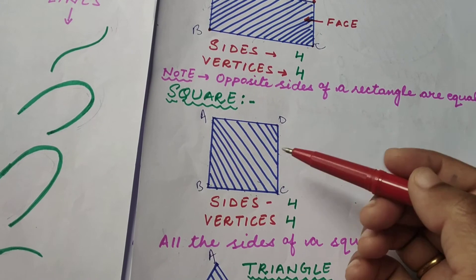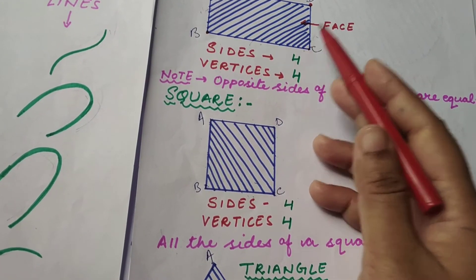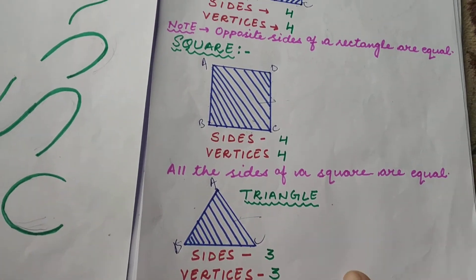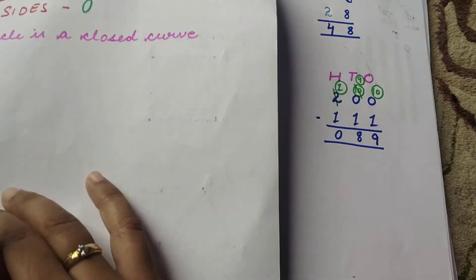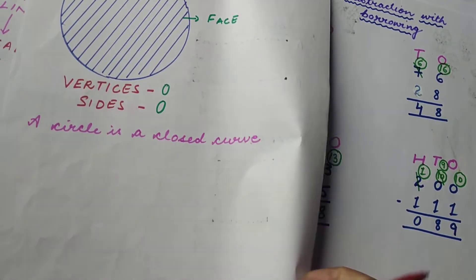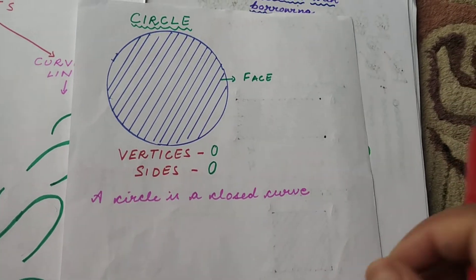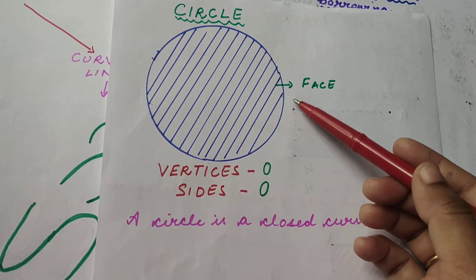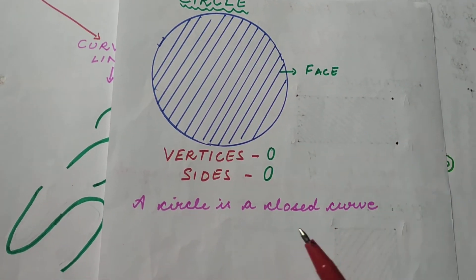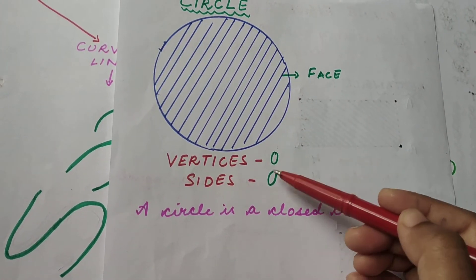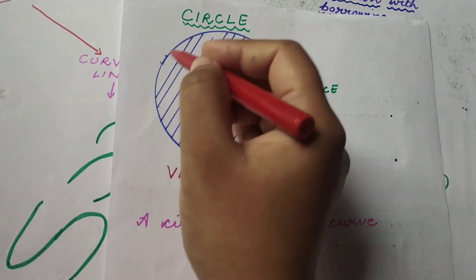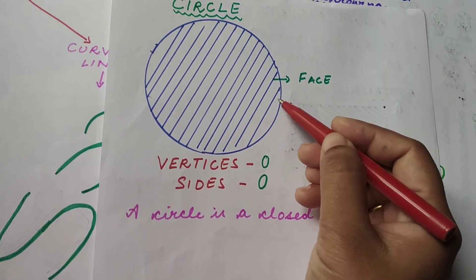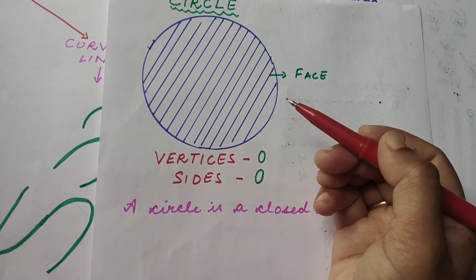These figures all have only one face — one face, one face, one face. The next figure is a circle. A circle is a rounded figure. There are no vertices and no sides. A circle is a closed curve; it is like a curved, round, closed figure.